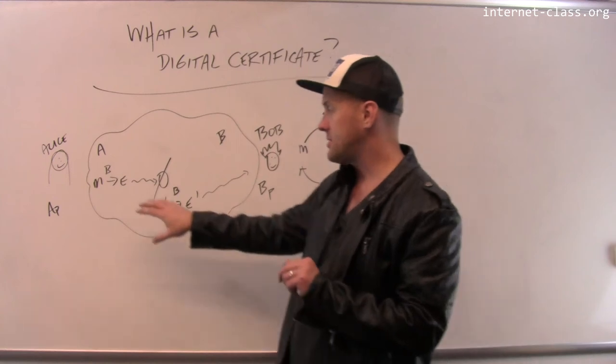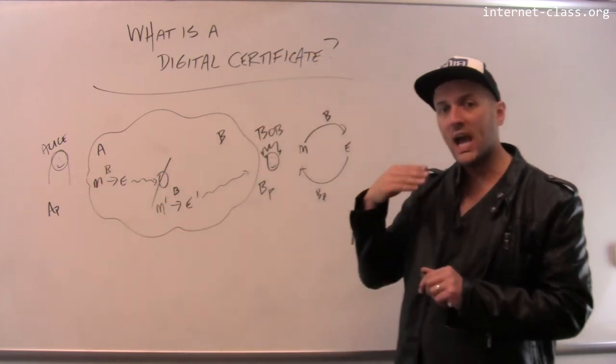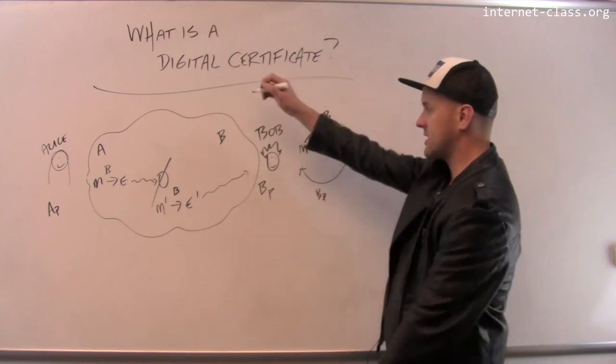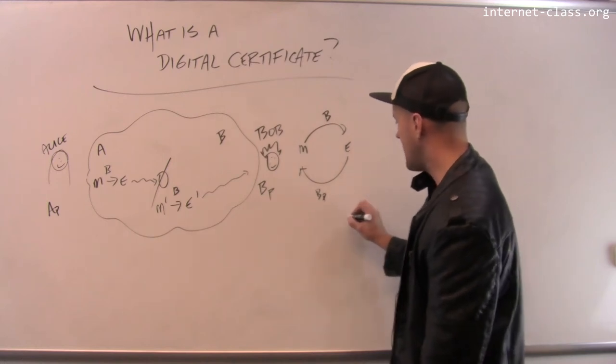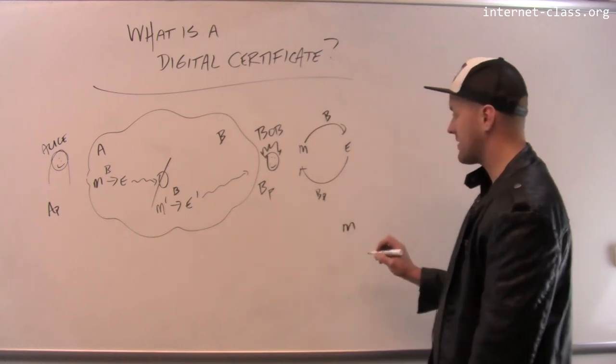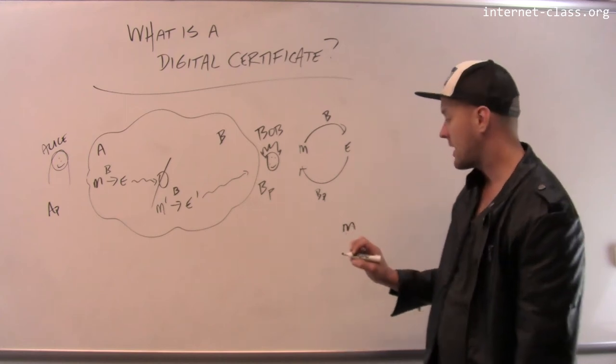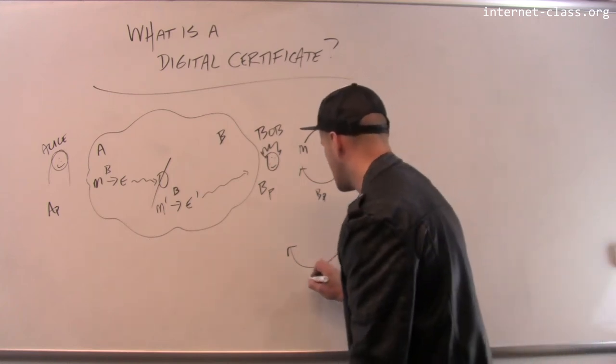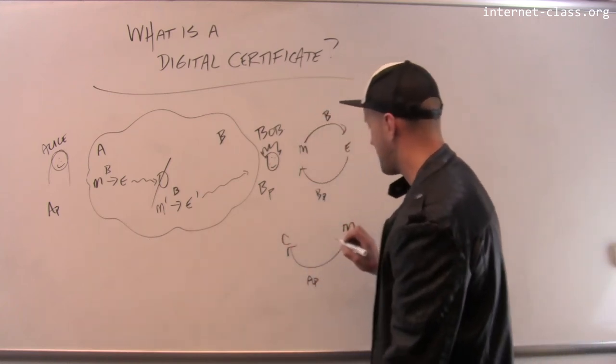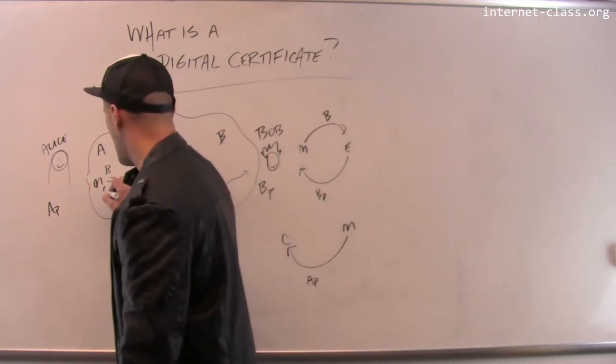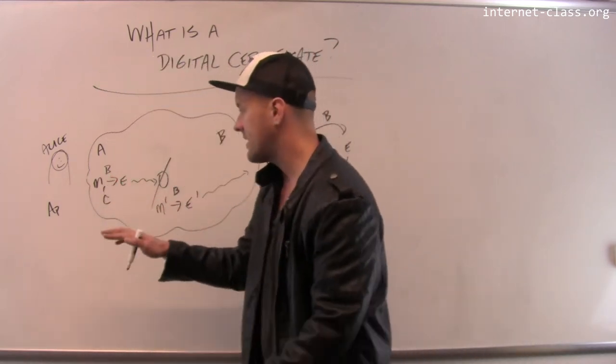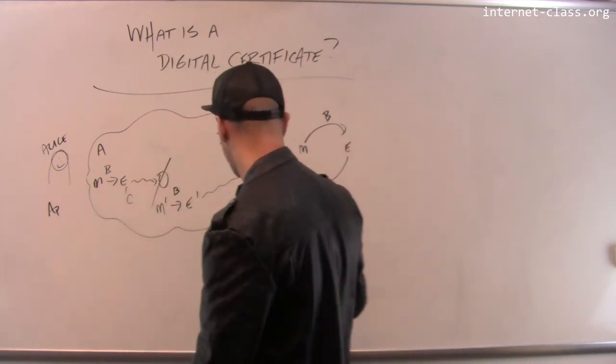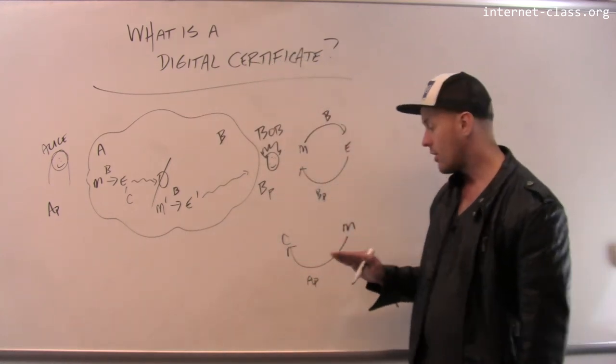For example, here's what Alice would do. Alice would take her message, and along with the message, she would send what's called a digital signature. She would take the message contents, in this case this is M, and rather than creating an encrypted message using Bob's public key, she creates a certificate using her own private key. So she uses her private key, and she creates a certificate C. And she sends that along with her message. She sends E and C. So she sends the encrypted message and she sends this digital certificate that she's created using her own private key.